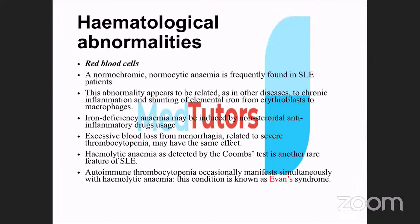Hematologically, SLE patients can develop anemia from chronic disease or hemolysis. Evan syndrome refers to the combination of autoimmune hemolytic anemia and autoimmune thrombocytopenia occurring together. Thrombocytopenia is also common, as is leukopenia — white cell count persistently less than 4.0 × 10⁹/L.